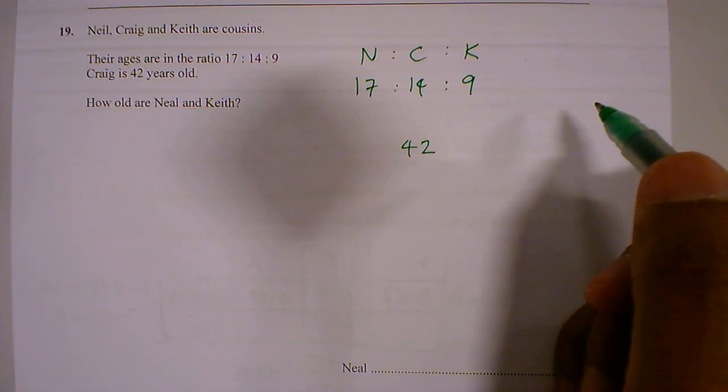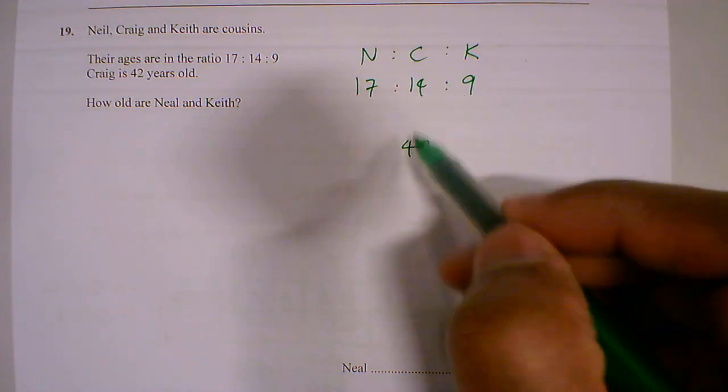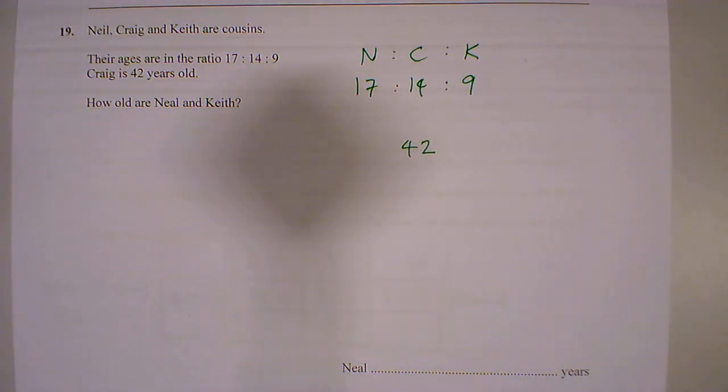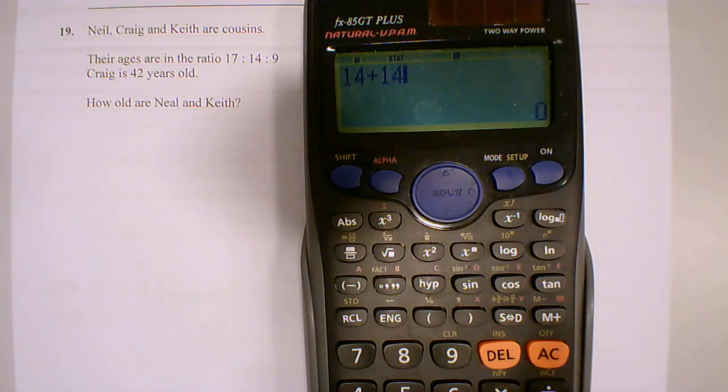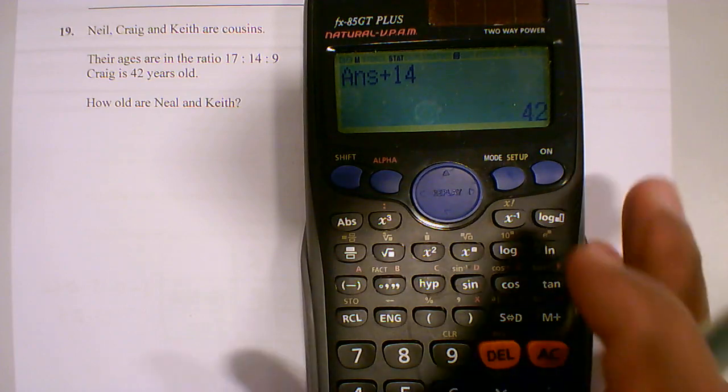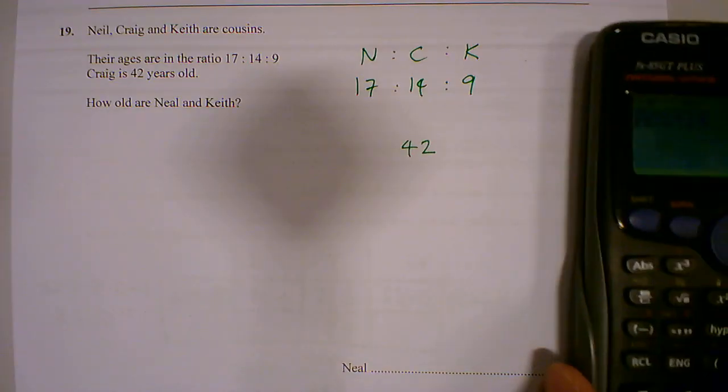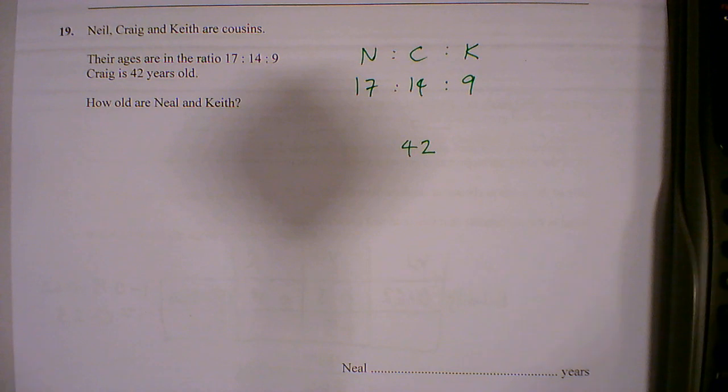So there are a number of ways I can do this. I can keep adding 14 to see how I get to 42, once, twice, and again. So if I add 14 and 14, this becomes...